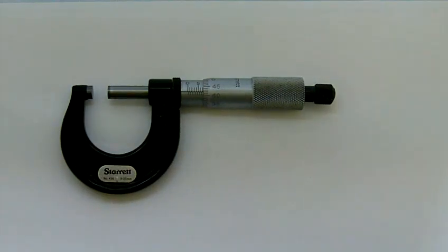This is a 0 to 25 millimeter metric micrometer caliper. It functions exactly the same as the last video, the inch micrometer caliper. The only difference is the scale is different. So in this video, we'll learn how to read the metric scale.